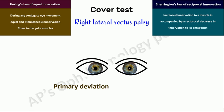So, in a paralytic strabismus, the secondary deviation is greater than the primary deviation as a result of Hering's law.